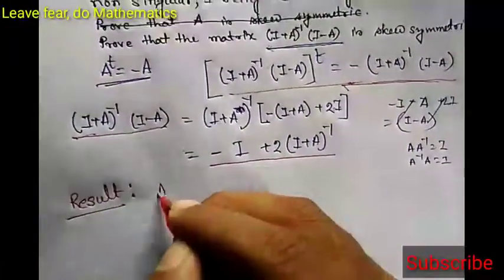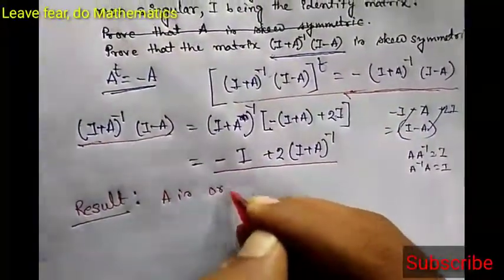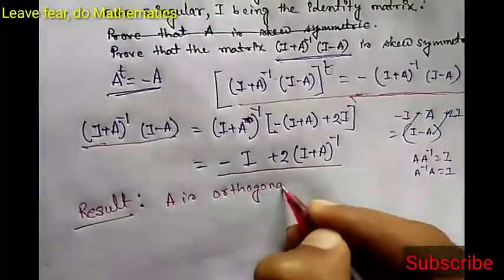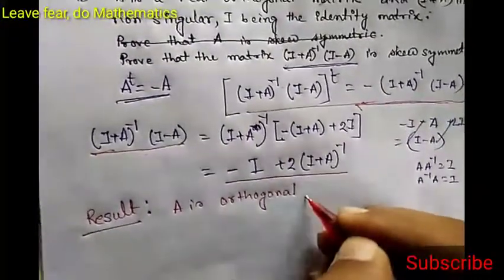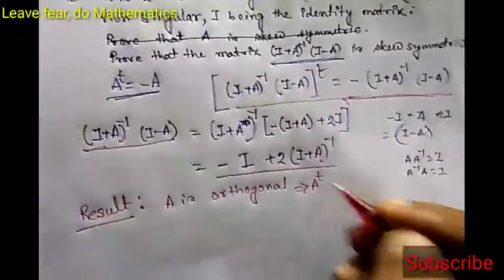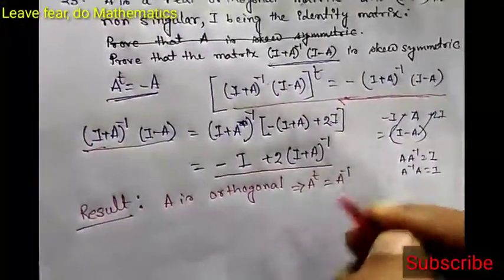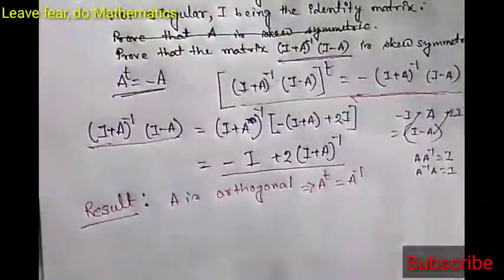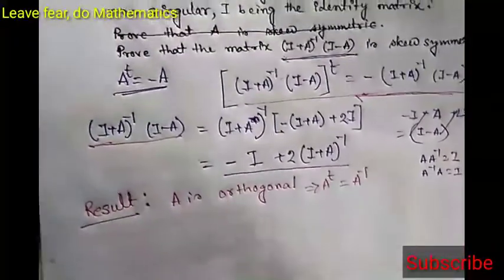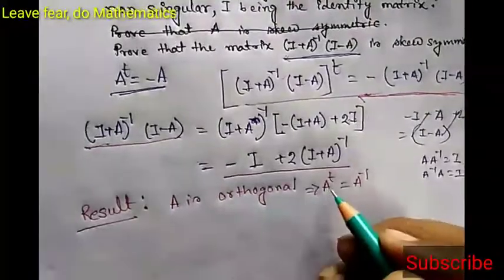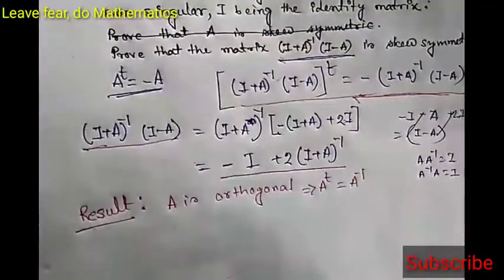Now we need a result. If A is orthogonal, that means A transpose equals A inverse. This proof is very easy, so I leave it as an exercise. Let me know in the comment section if you can do this proof. So A is orthogonal means A transpose equals A inverse.